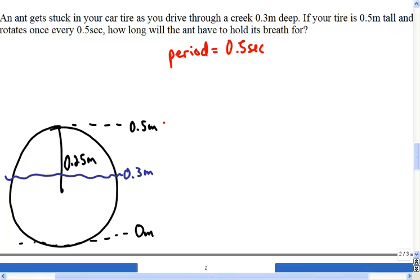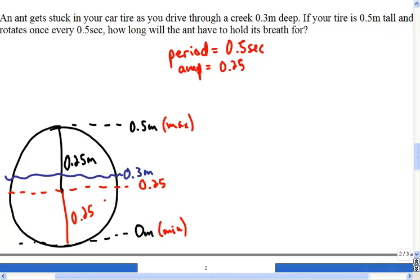So I can see my maximum and my minimum in this picture, so I can come up with an amplitude, which is going to be 0.25. This line here would be 0.25, right at the middle of the wheel, so that means I had to go up by 0.25.